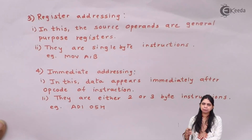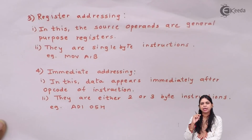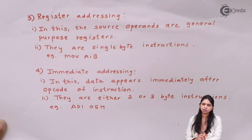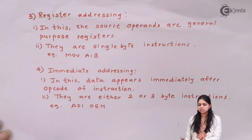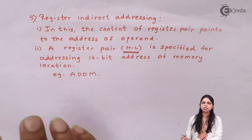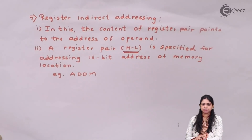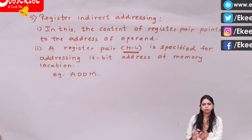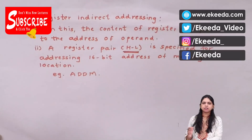Immediate addressing mode — the data appears immediately after the instruction. Whenever instructions like MVI, ADI, SBI appear, they come under immediate addressing mode because data appears immediately after the opcode. Finally, register indirect addressing mode — the content of the register pair points to the address of the operand, for example ADD M. All instructions fall under one of these addressing modes. I hope you have understood the addressing modes of the 8085. In the next video we will study the data transfer group. Thanks for watching.